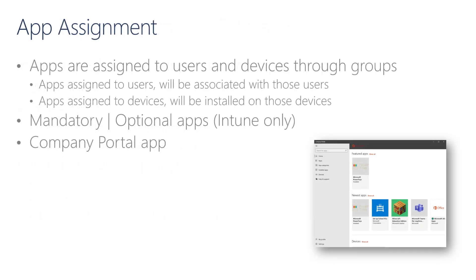Similarly, as we saw in Module 4 with settings, applications can be deployed by assigning them to security groups. If you target a security group containing users, the apps will be installed on any managed device that the user signs in to. Likewise, if you target security groups containing devices, the apps will be installed on those devices and available to any user signing in.